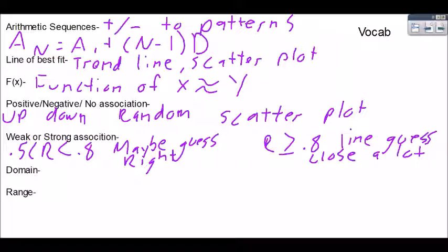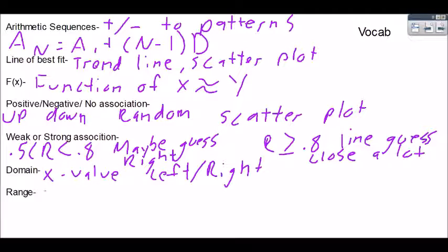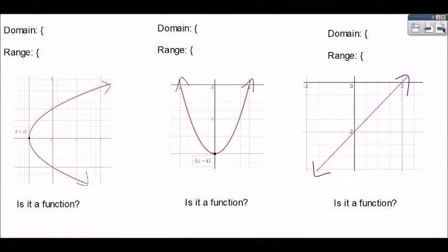The domain is all of our x values and it's how far left to right our graph goes. And then range is our y values and it's always down to up. Okay, so I have a couple graphs for us. I want us to find the domain range of each graph and then do a quick review. Is it a function?